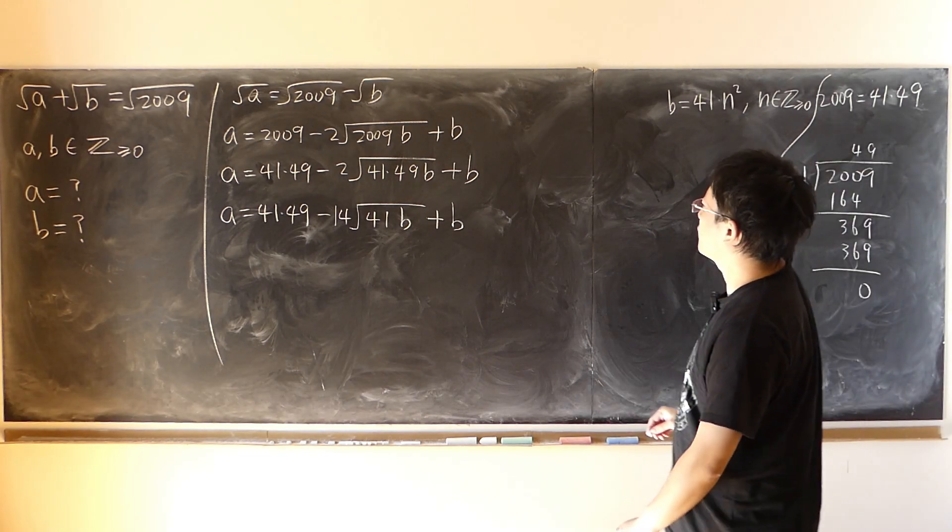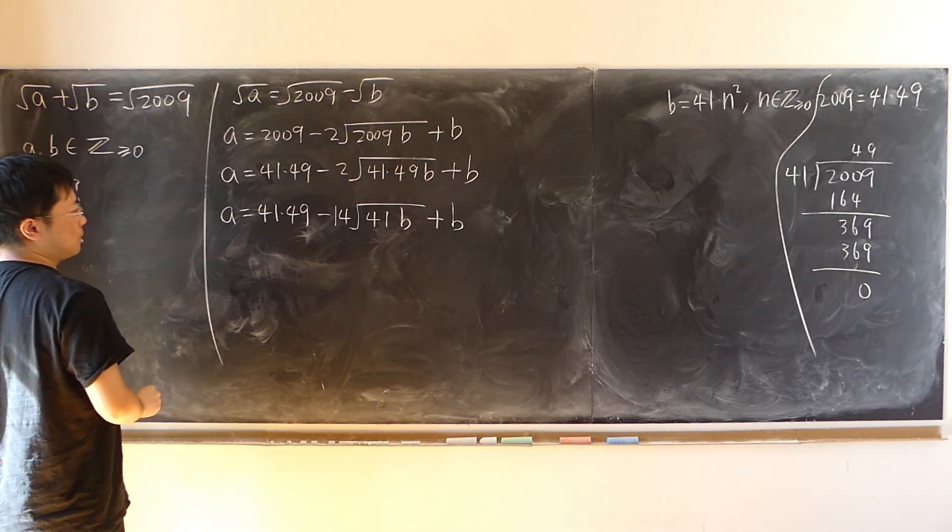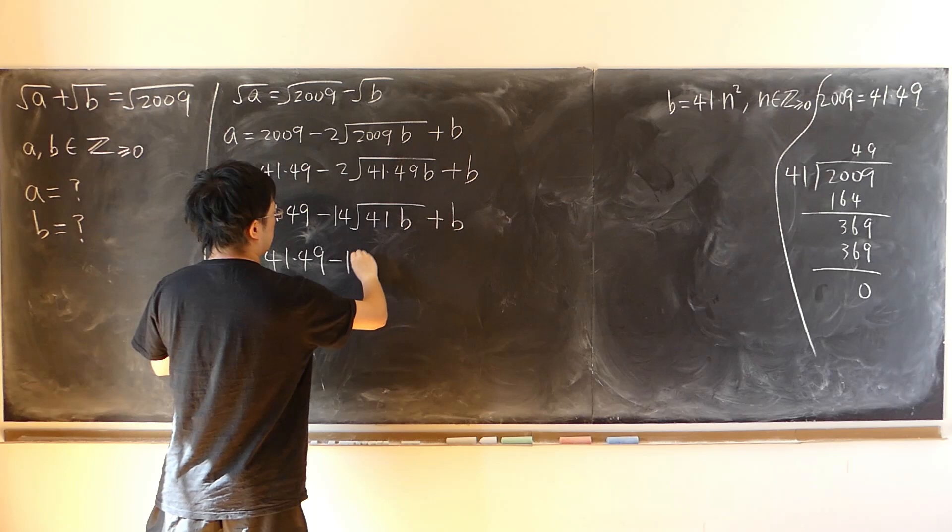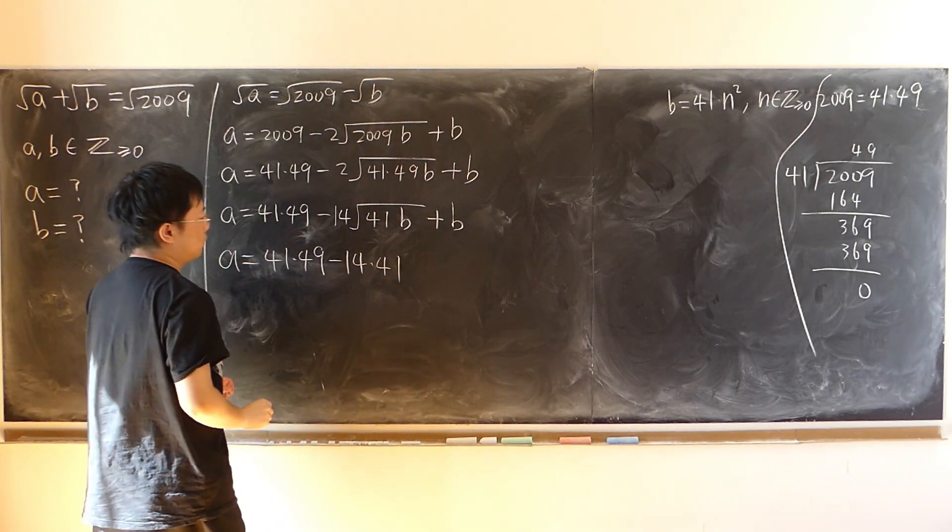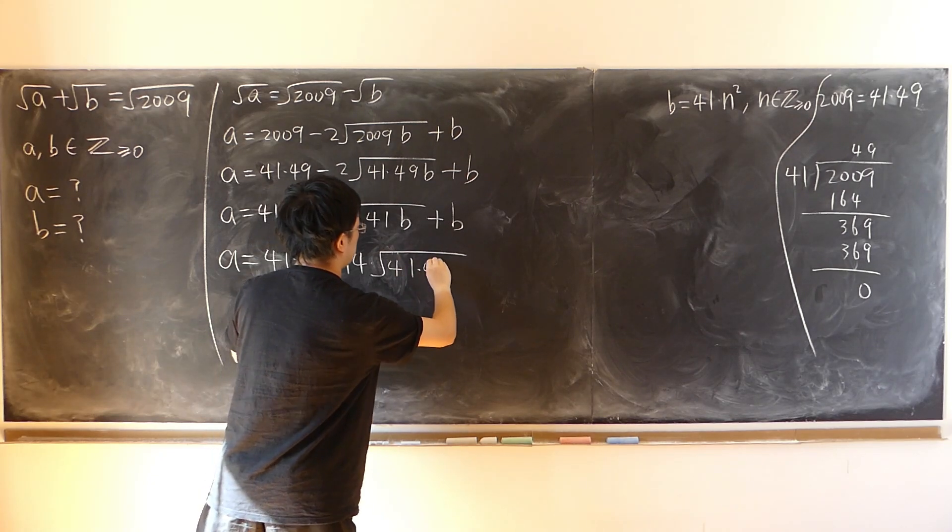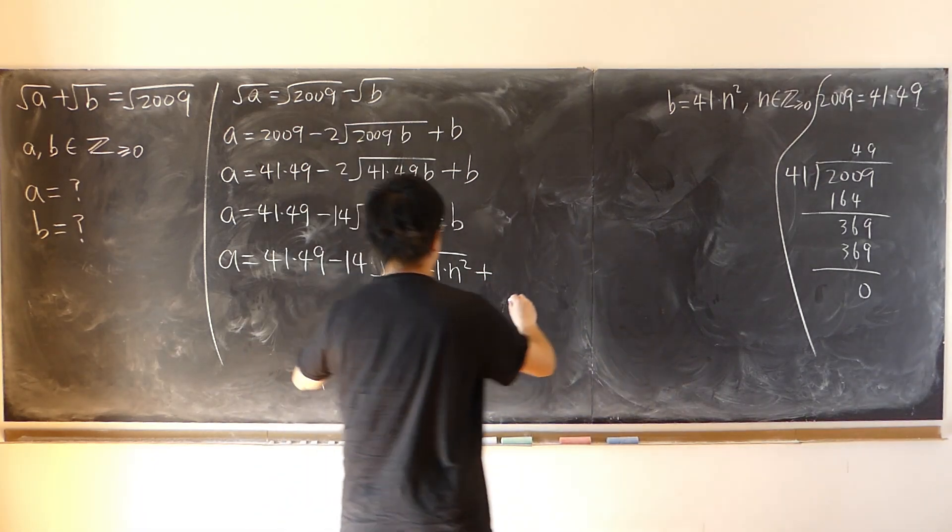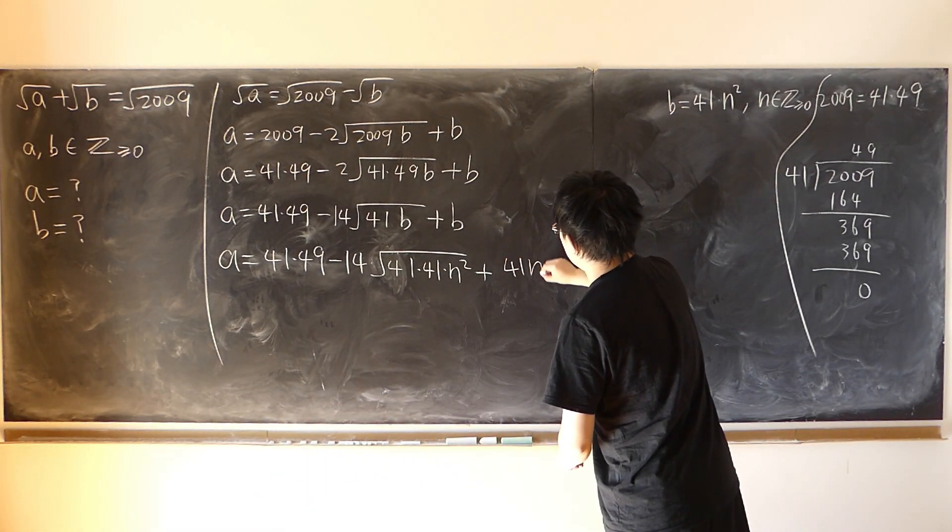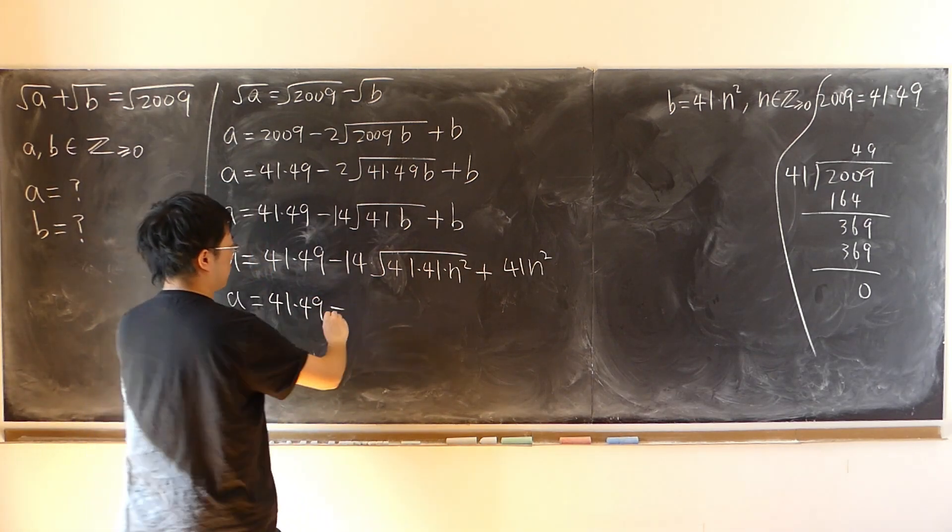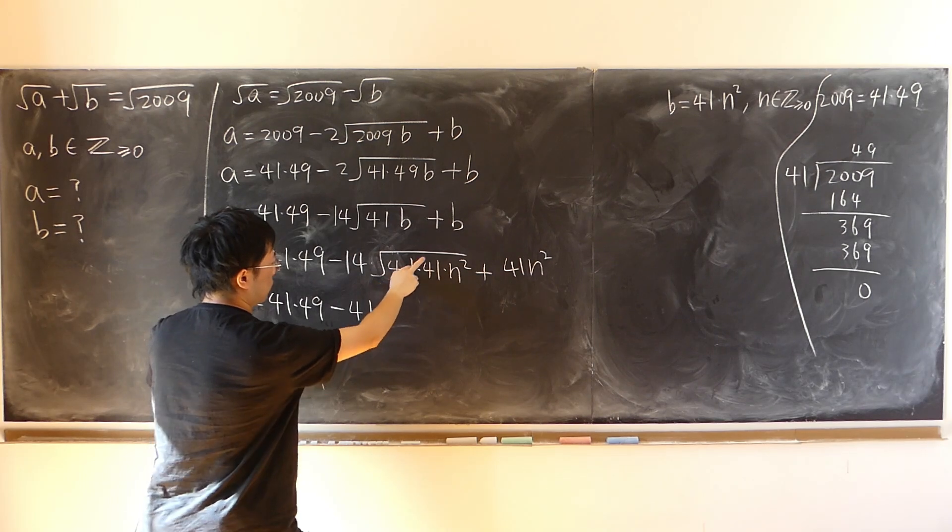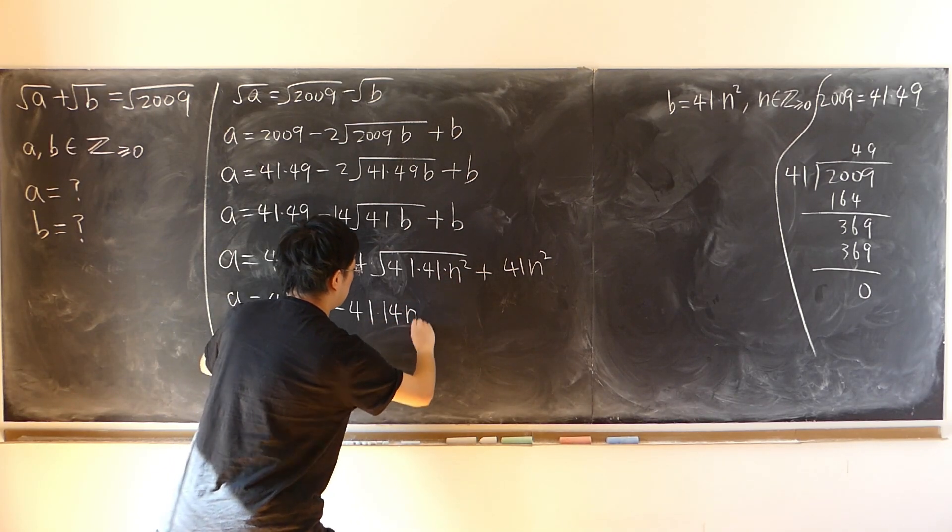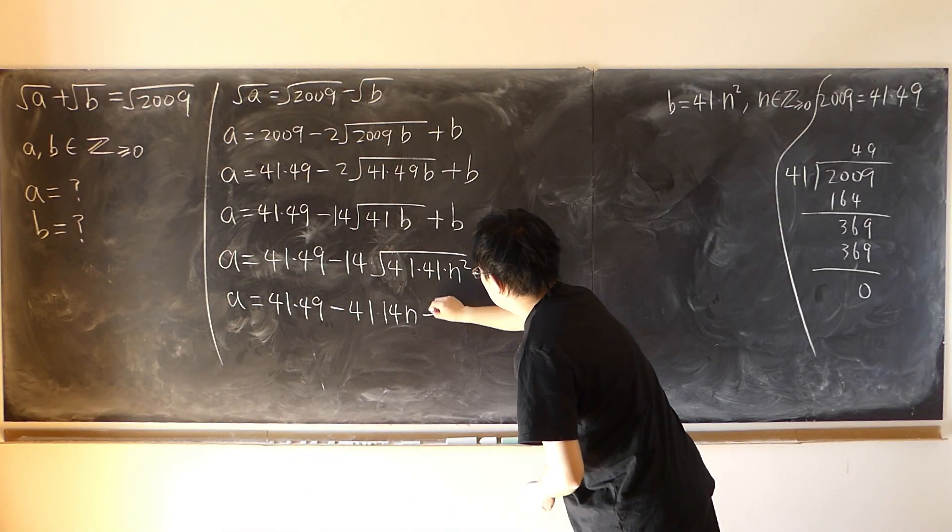So that way, a is 41 times 49, minus 14 times, so I just take 41 out, 41 times n. Times 14 times square root of n square, that is n, plus 41 times n square.